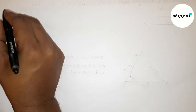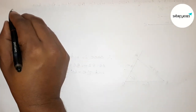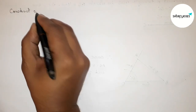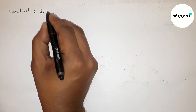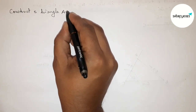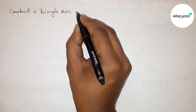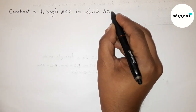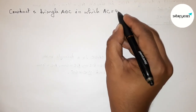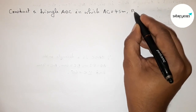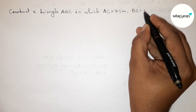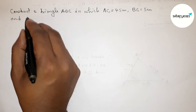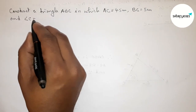Hi everyone, welcome to SI Share Classes. Today in this video we have to construct a triangle ABC in which AC equals 4.5 centimeters, BC equals 5 centimeters, and angle C equals 60 degrees. So let's start the video.